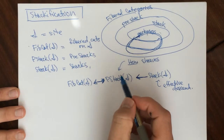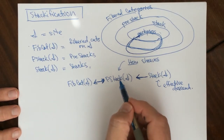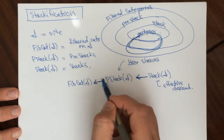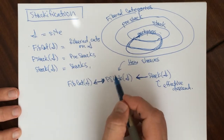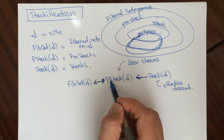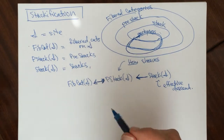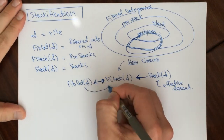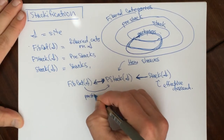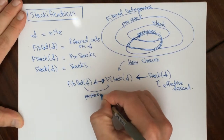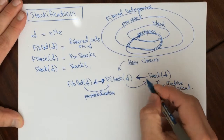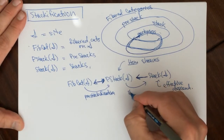In this construction there are adjoints. There is a natural inclusion, and then there is a functor going the other way called pre-stackification. And then from pre-stacks to stacks, this functor is called stackification.